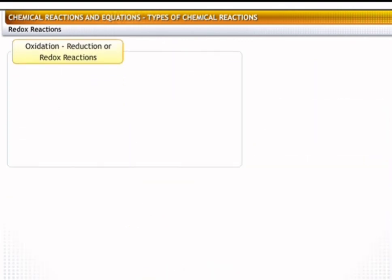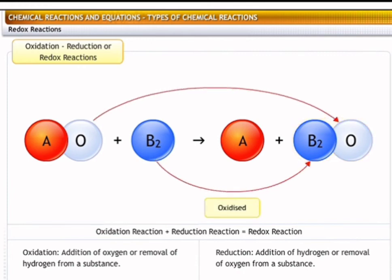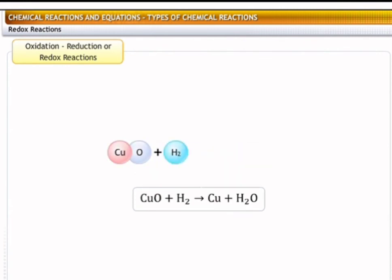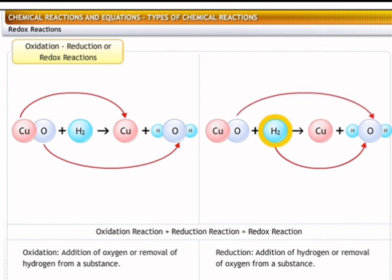Oxidation and reduction reactions occurring together are known as redox reactions. In a redox reaction, a substance that gains oxygen is said to have been oxidized, and the one that loses oxygen is said to have been reduced. For example, copper oxide on heating with hydrogen forms copper metal and water. In this reaction, oxygen is removed from copper oxide, so copper oxide is reduced to copper. On the other hand, hydrogen is changed into water, meaning oxygen is added to hydrogen, so hydrogen is oxidized to water. Thus, oxidation and reduction occur together, making it a redox reaction.